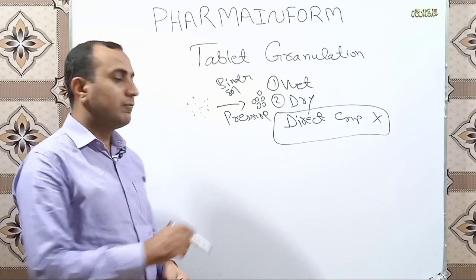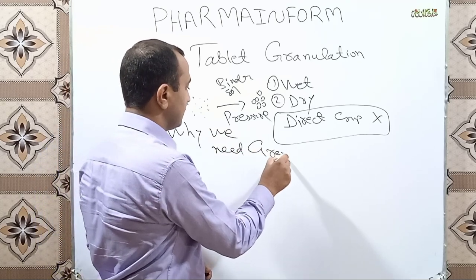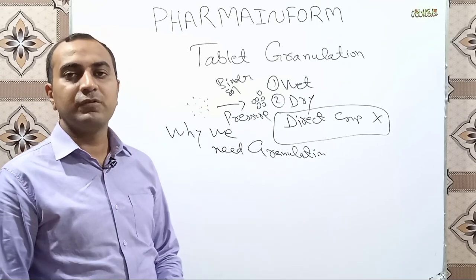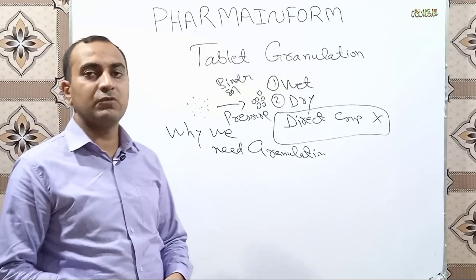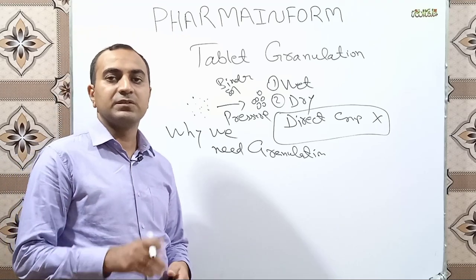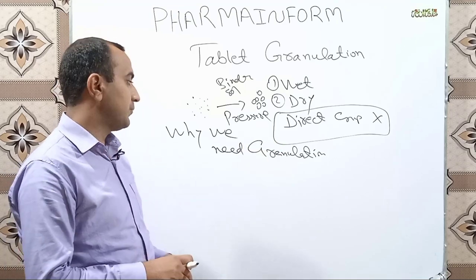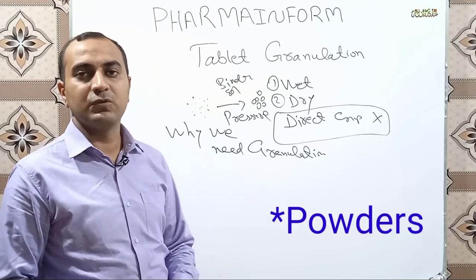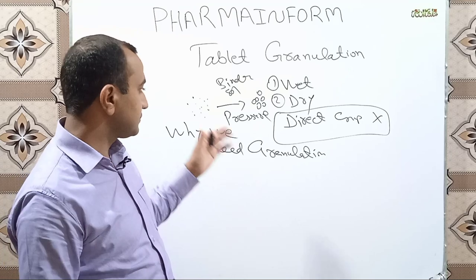Now we will discuss why we need granulation — why we convert our powders into granules. We need granulation because powder flow is not good. Granules have very good flow. Due to flow issues, we may observe weight variation problems during compression. Also, powders are dusty, so line loss and a dusty environment are produced when dealing with powders.